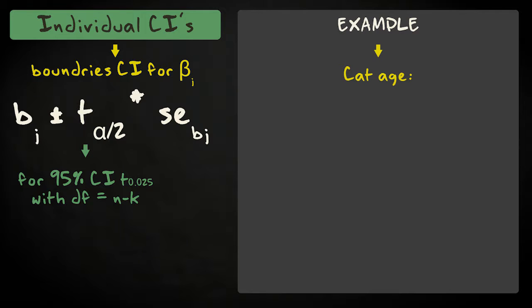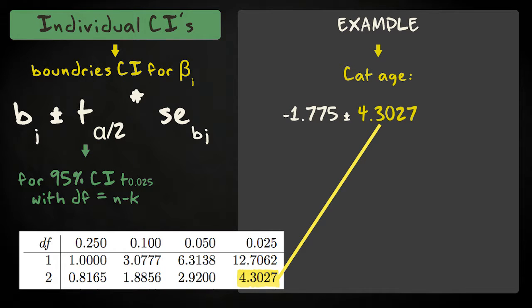The margin of error for a 95% confidence interval is the t-value, associated with n minus k degrees of freedom and half the significance level of 0.05, times the standard error.